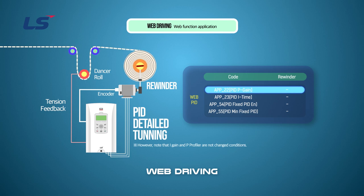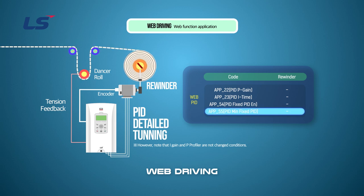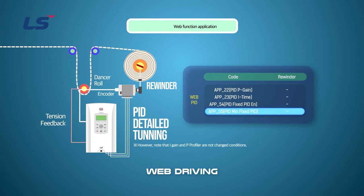Note that the PID I-gain and P-profiler functions have not been changed. APP group number 54, fixed PID enable, is used when the web PID is less responsive than the main speed. APP group 55, minimum fixed PID, is good to use when the motor cannot keep up with the speed of the system due to the small amount of PID at low speed when using proportional PID. However, if the value is set too large, too much compensation will cause the dancer to fall.